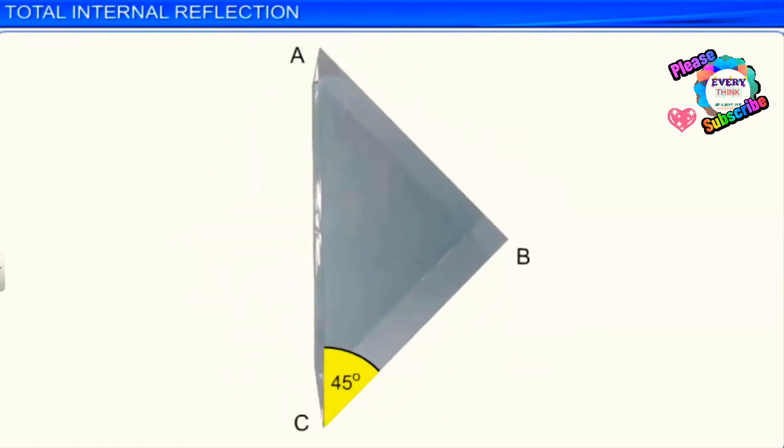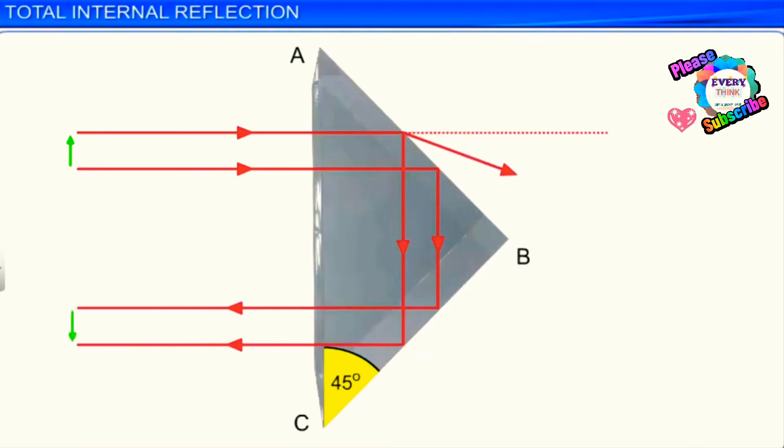If light is incident normally on the side AC, it travels straight and hits side AB. Then, light is internally reflected twice at surface AB and BC, and leaves the prism with a deviation of 180 degrees.